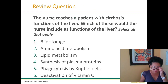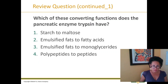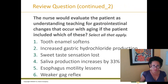These are review questions. The nurse teaches a patient with cirrhosis about functions of the liver — which of these would the nurse include? Answers are 2, 3, 4, and 5. Which converting function does the pancreatic enzyme trypsin have? The answer is 4. I'm going quickly through these because we have four chapters.